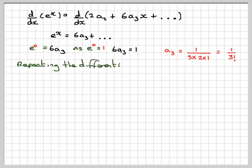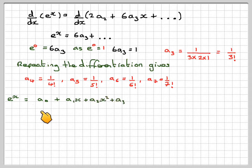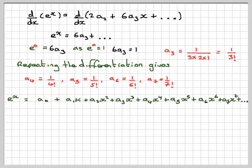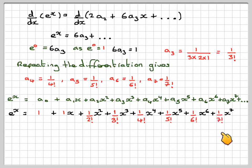If we repeat, we can see there's a pattern here. a4 will be 1 over 4 factorial, a5 will be 1 over 5 factorial, a6 will be 1 over 6 factorial, and a7 will be 1 over 7 factorial. So, substituting all values back into our original statement, e to the x equals 1 plus x plus x squared over 2 factorial plus x cubed over 3 factorial plus x to the 4 over 4 factorial plus x to the 5 over 5 factorial plus x to the 6 over 6 factorial plus x to the 7 over 7 factorial.